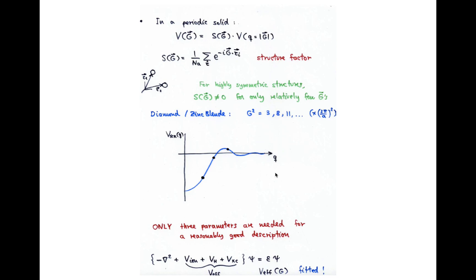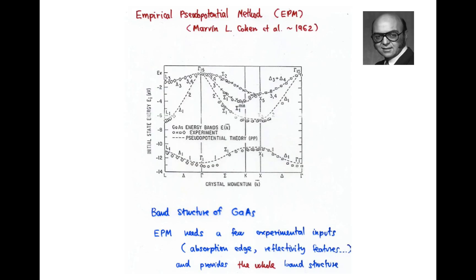You can fit these three numbers to experimental information. And you have the empirical pseudopotential method that Marvin Cohen and co-workers developed in the early 60s. This was extremely successful because it allowed you to get some relatively limited experimental information, plug it into your theory through those three parameters, and then get the whole band structure of mostly semiconductors in those days. This was a huge step forward.